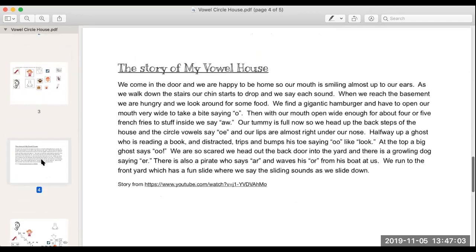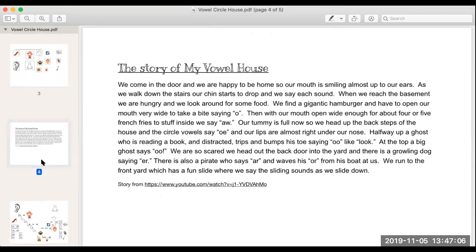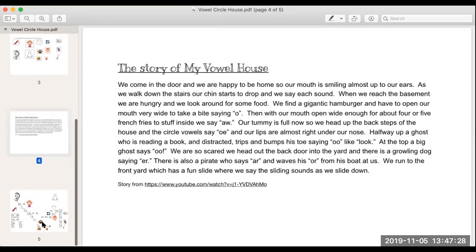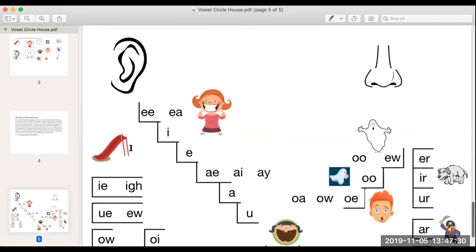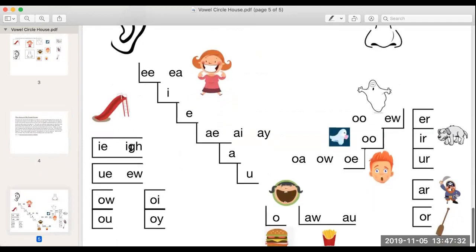This of course is the story, and if you are fortunate enough to have a double-sided printer, then you can print it on the other side. I just put mine in a little plastic sleeve and I have the vowel house on one side and the story on the other side. This is the video that I originally got this story from, and unfortunately it's no longer on YouTube, so this is my best attempt to reclaim that video.